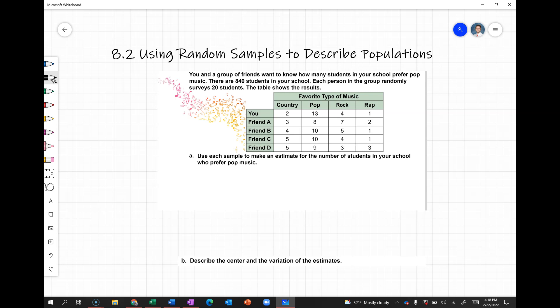So the people you surveyed, two of them said their favorite type of music is country, 13 said pop, four said rock, and one said rap. We're going to use each of these samples to make an estimate for the number of students in our school who prefer pop music.